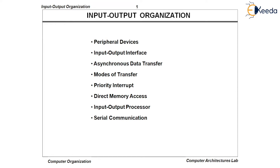Now let us understand how the user will be able to communicate with the computer system. The CPU is going to execute the programs, but how will a user be able to load the programs within the computer system? In order to load a program within a computer system, we require some communication medium through which we will be able to communicate with the computer system, and thereby the programs will get loaded within the main memory. So we use peripheral devices — any peripheral device acts as a medium between the CPU and the user through which a communication will get established.